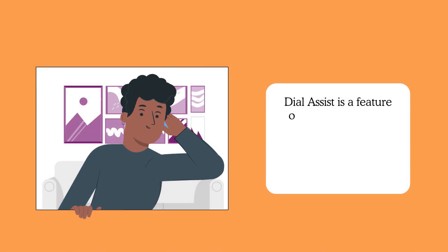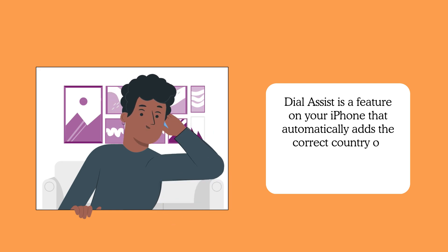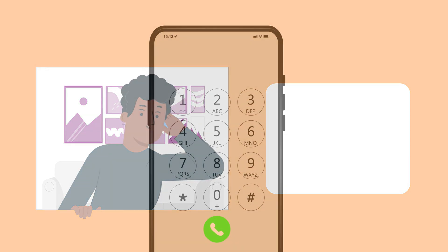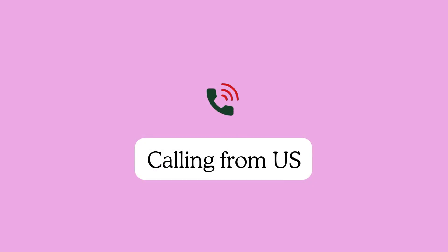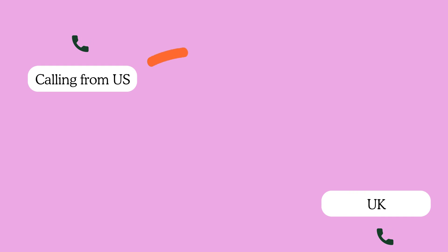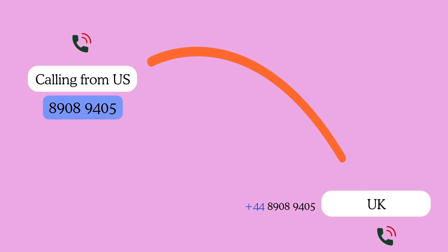Dial Assist is a feature on your iPhone that automatically adds the correct country or area code when making a call. It's incredibly useful when you need to call someone internationally without memorizing country codes. For example, if you're in the U.S. and want to call someone in the U.K., instead of typing in the full number with the plus 44 code, you can just dial their local number and Dial Assist will do the rest.